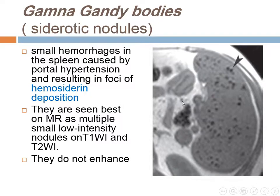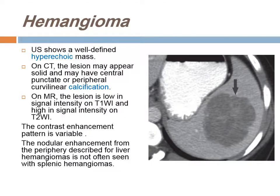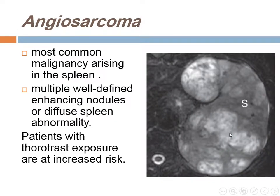Gamma-Gandy bodies are siderotic nodules — small hemorrhages in the spleen caused by portal hypertension resulting in foci of hemosiderin deposition, appearing low in all MRI sequences and not enhancing on contrast. Hemangioma on ultrasound shows a well-defined hyperechoic mass. On CT they appear solid and may have central or peripheral calcification. On MRI they are low in T1 and high in T2. Nodular peripheral enhancement seen with hepatic hemangioma is not seen with splenic hemangioma. Angiosarcomas are rare but are the most common malignant tumor arising in the spleen, appearing as multiple well-defined enhancing nodules or diffuse splenic abnormality.